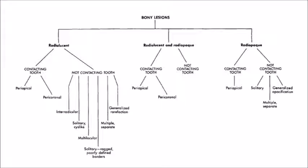Radiopaque bony lesions can also be contacting the tooth or not contacting the tooth. If contacting the tooth, it can be a periapical lesion. If not contacting the tooth, it can be a solitary lesion, multiple separate lesions, or a generalized opacification. If there is a mixture of both radiolucent and radiopaque, it can still be contacting or not contacting the tooth — if contacting, it can be a periapical or pericoronal lesion.